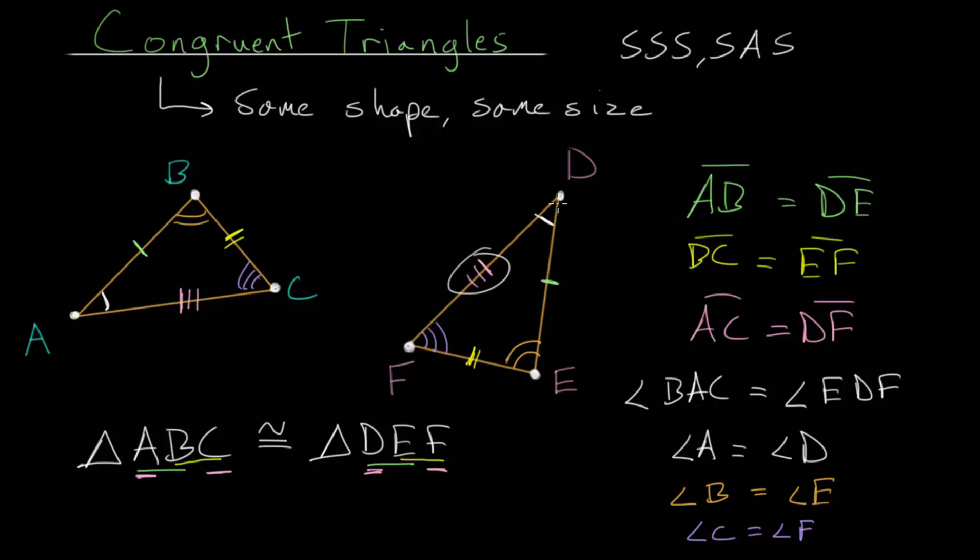so maybe this side, this angle, and this side, and the corresponding ones on the other one, then the two triangles are equal.